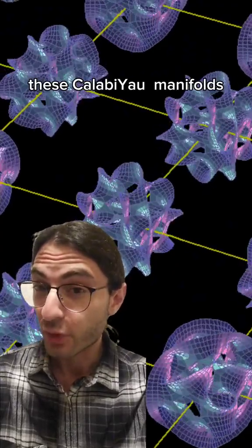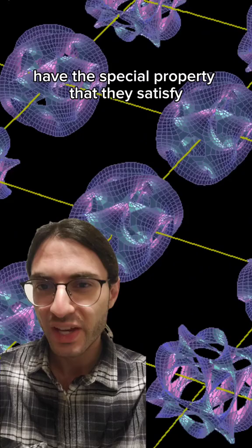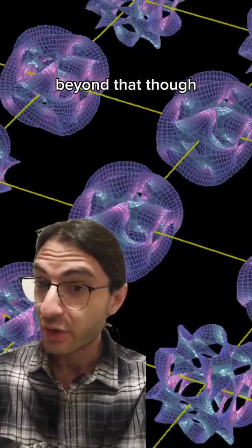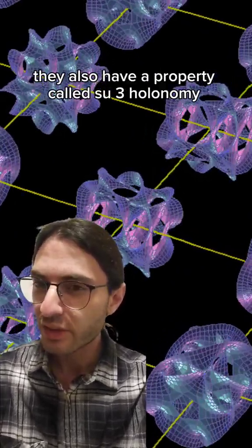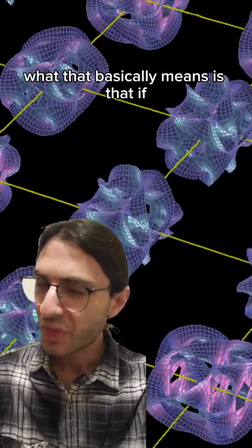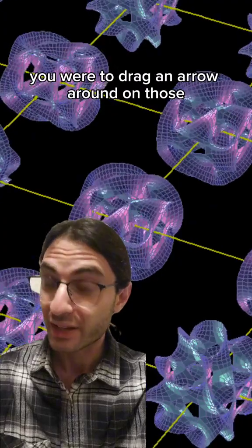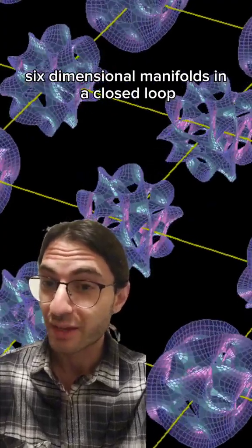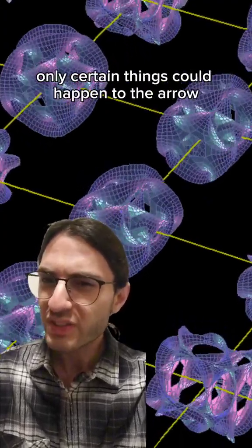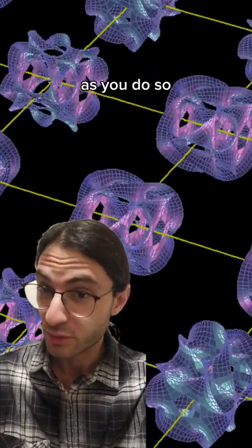These Calabi-Yau manifolds have the special property that they satisfy Einstein's field equations for gravity. Beyond that, though, they also have a property called SU3 holonomy. What that basically means is that if you were to drag an arrow around on those six-dimensional manifolds in a closed loop, only certain things could happen to the arrow as you do so.